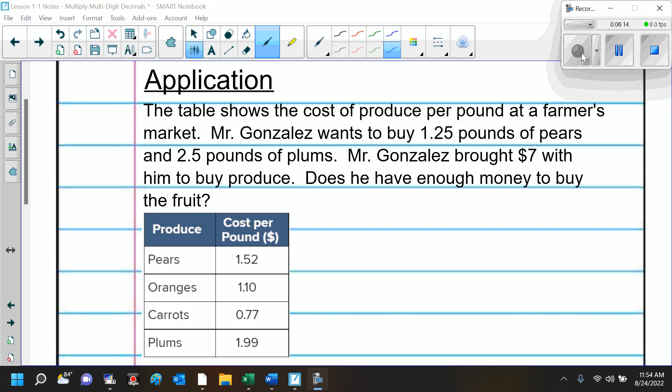So, in this problem, what is the important information? We've got 1.25 pounds of pears. We've got 2.5 pounds of plums. What else is important? Good. He has $7. He brought $7 with him. And the question is, does he have enough money? Now, how much does it cost for pears? $1.52. And how much does it cost for plums? $1.99.